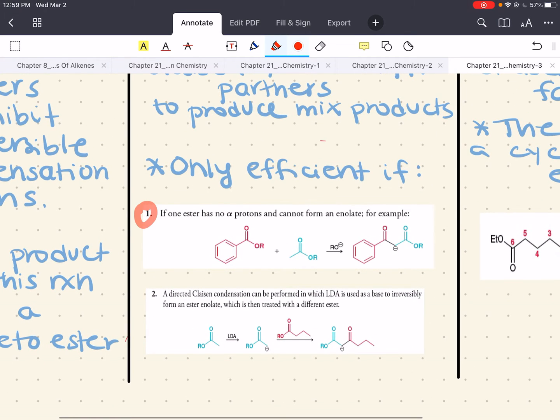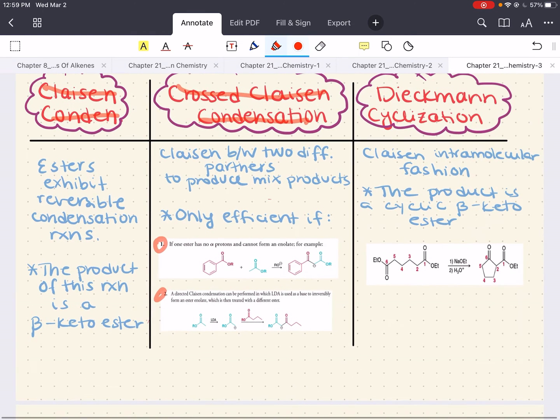One, if one ester has no alpha protons and cannot form an enolate. Or two, a directed Claisen condensation can be performed in which LDA is used as a base to irreversibly form an ester enolate, and then that can be treated with a different ester.